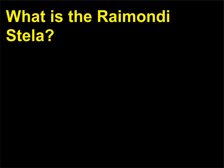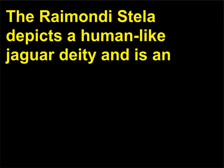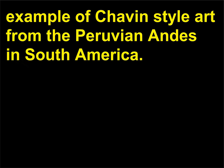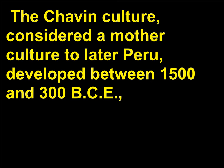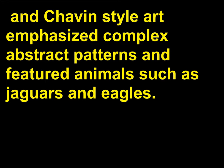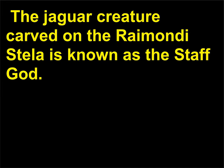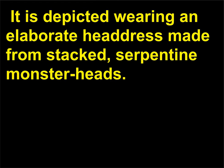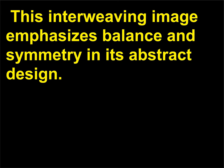What is the Raimondi Stela? The Raimondi Stela depicts a human-like jaguar deity and is an example of Chavin style art from the Peruvian Andes in South America. The Chavin culture, considered a mother culture to later Peru, developed between 1500 and 300 BCE, and Chavin style art emphasized complex abstract patterns featuring animals such as jaguars and eagles. The jaguar creature carved on the Raimondi Stela is known as the Staff God, depicted wearing an elaborate headdress made from stacked serpentine monster heads. This interweaving image emphasizes balance and symmetry in its abstract design.